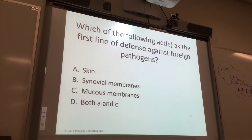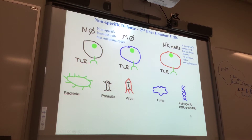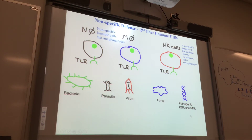Which of the following acts as a first line of defense? D, A, and C — you are correct. So this is a cartoon of immune cells in the second line of defense — we're still in non-specific. Neutrophils, macrophages, and natural killer cells — here are the cells with their toll-like receptors, or TLRs. Bacteria, parasites, viruses, fungi, pathogenic DNA or RNA — all of these things that could hurt you are recognized non-specifically by toll-like receptors on neutrophils, macrophages, and natural killer cells.